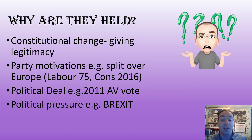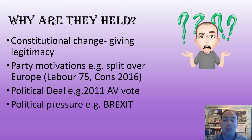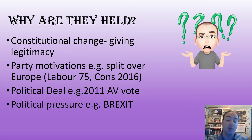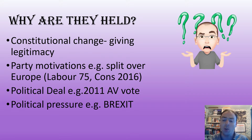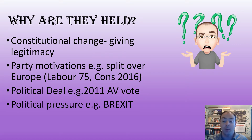A referendum can be part of a political deal — we saw this with the coalition government where the Conservatives said 'come to government with us' and the Liberal Democrats said 'yes, but we want a referendum on changing the electoral system,' which resulted in the 2011 vote on AV. And it can be due to general political pressure — external pressure on a political party — as we saw with the Brexit referendum, driven by the growth of UKIP, pressure from backbenchers, and a general feeling that it was what people wanted, although Cameron never believed he was going to lose the referendum when he called it.